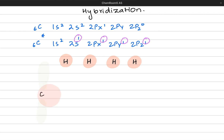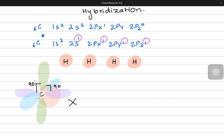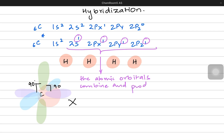Carbon has one s orbital which can make a bond, a py orbital, a px orbital, and a pz orbital. Three are p orbitals with 90 degree angles between them and one is the s orbital which is spherical. That means three bonds would be different and the fourth would be different — and that is not the case. What actually happens is that carbon uses all these four orbitals to make hybrid orbitals. The atomic orbitals combine and make a new kind of orbital — a new set of hybrid orbitals where the s orbital and the p orbitals are all combined to make something new.